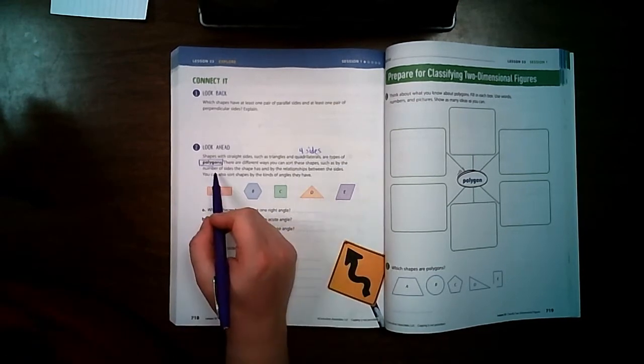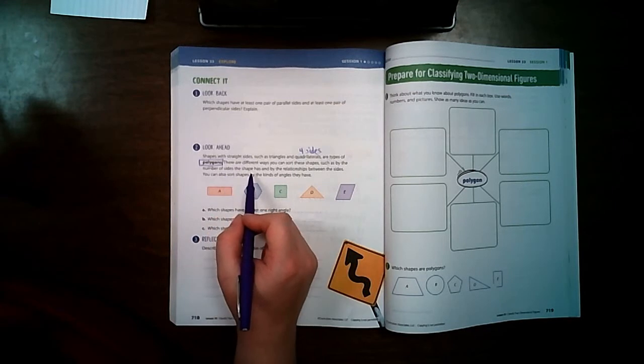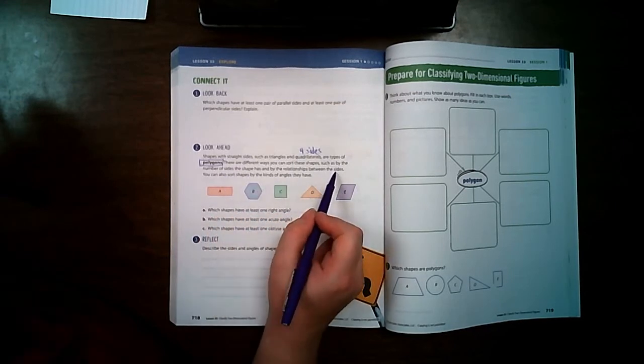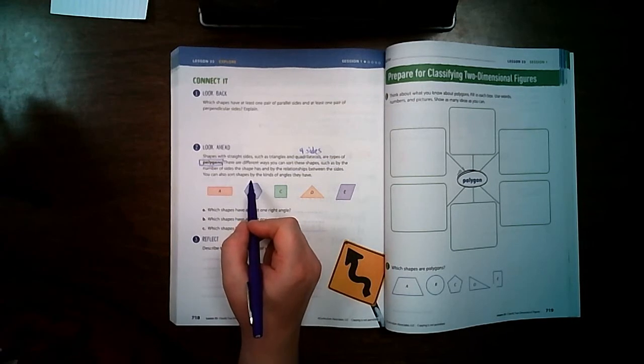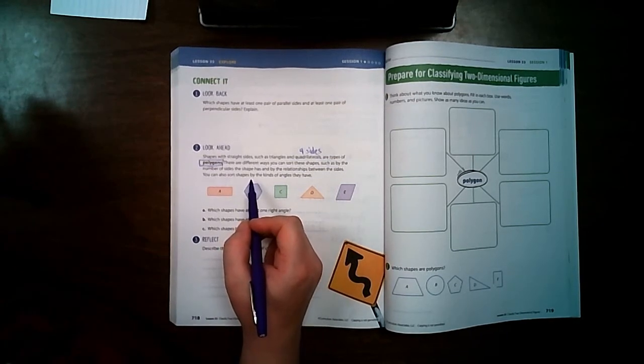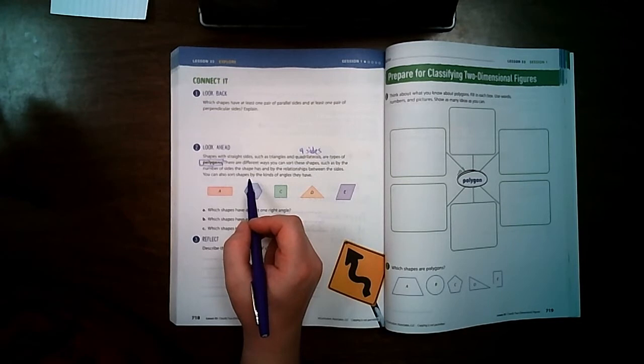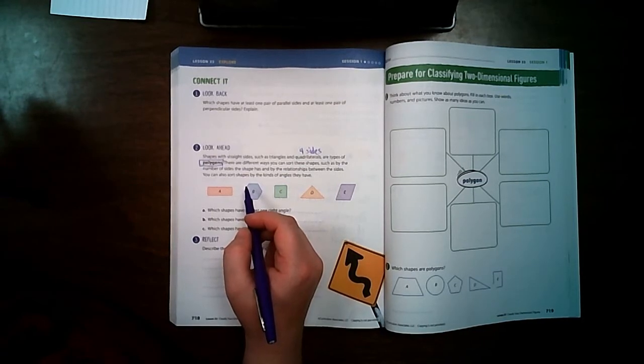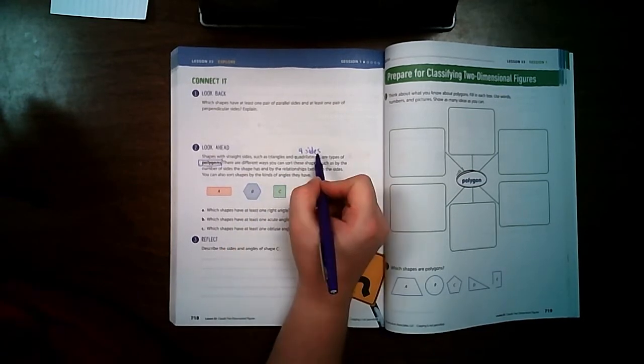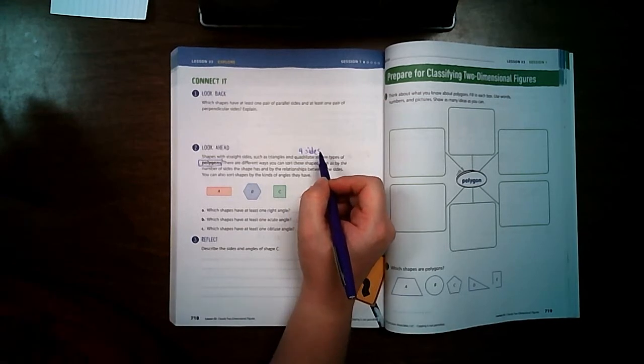This says you can sort them by the number of sides the shape has, the relationship between the sides, or you can also sort them by the type of angles that they have. And if you look in your instruction you're going to see a couple of different quadrilateral trees to determine if it's a quadrilateral or not. But always remember that quadrilaterals have four sides and there's different types of quadrilaterals.